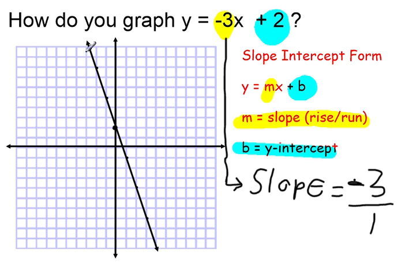So now I can simply connect all those points, and this line represents the solution set. It's the graph, and any point on this line is a solution to y equals negative 3x plus 2. The negative 3 is my slope, or it can be represented as negative 3 over 1, and my y-intercept is positive 2.